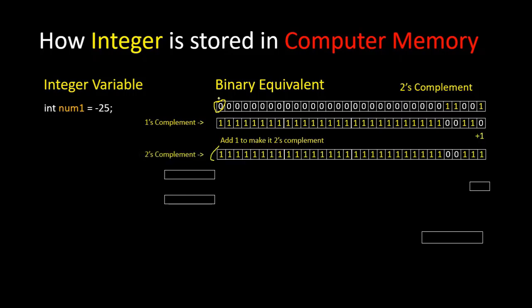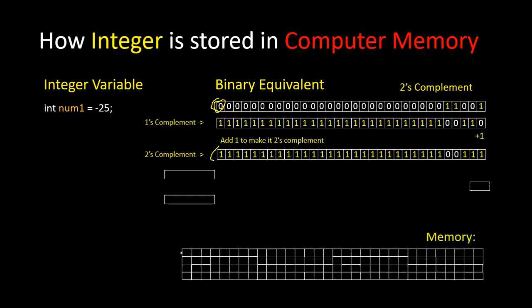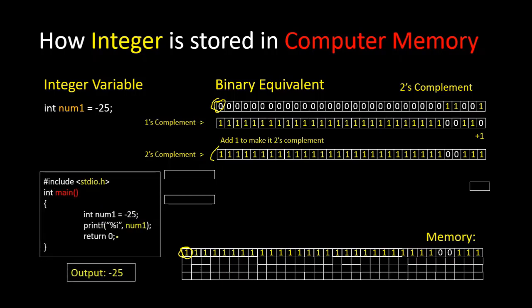This is the two's complement of this binary number. Here we see we have 1 at the leftmost position. This binary number will be stored in computer memory. If we consider this is our computer memory, for minus 25 we will have this binary number stored. Here we see the most significant bit or sign bit is 1, which means this is a negative integer.